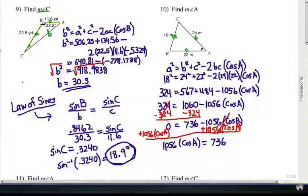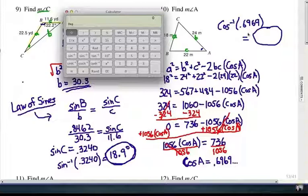1056 cosine A equals 736. Keep hanging in there with me. We have a few more steps. We're going to divide each side by 1056. And that will give us a decimal value for the cosine A. That will be .6969 and it actually keeps repeating. So we have to find the inverse cosine of that decimal value. And after a long series of steps, we are almost done.